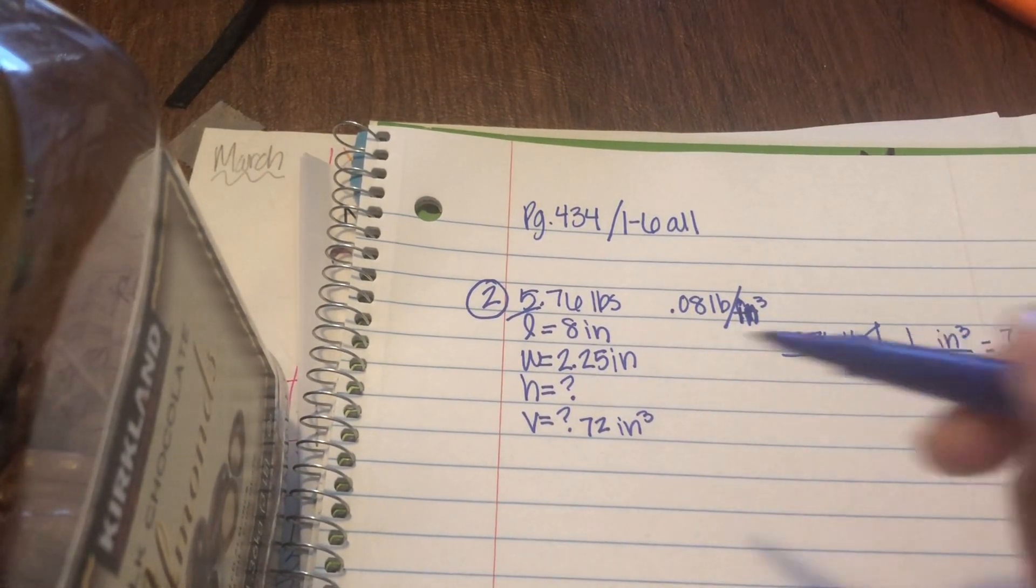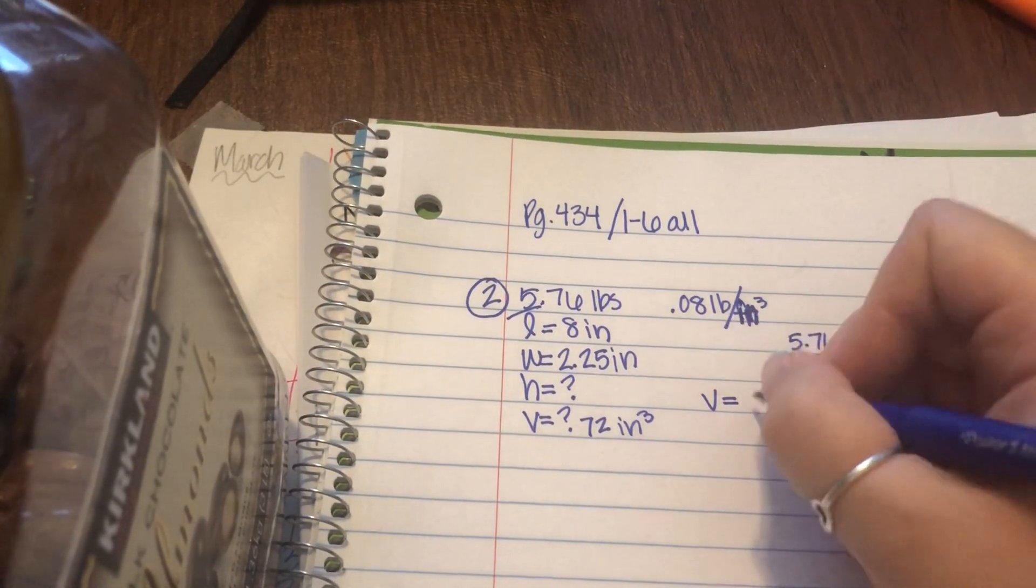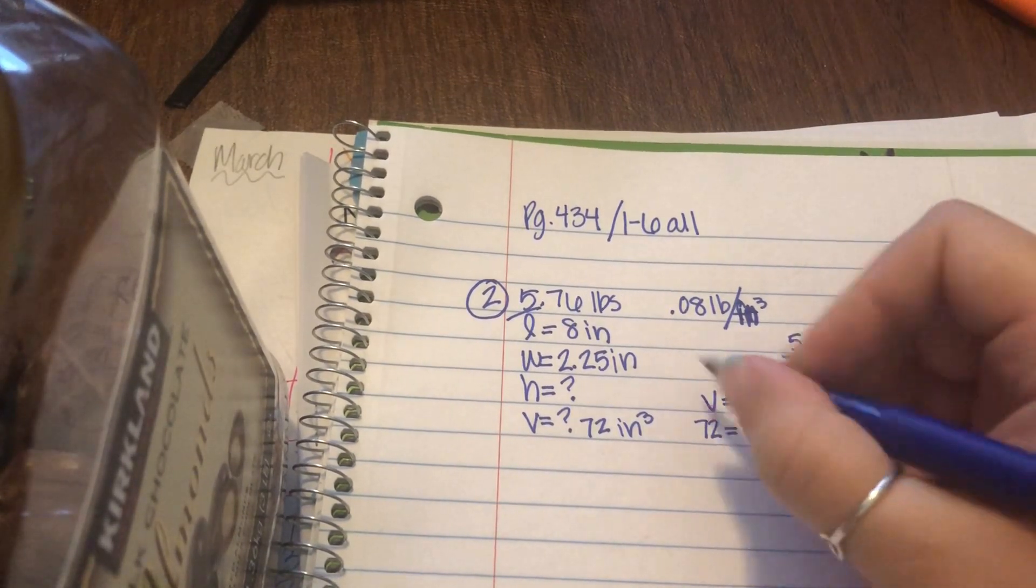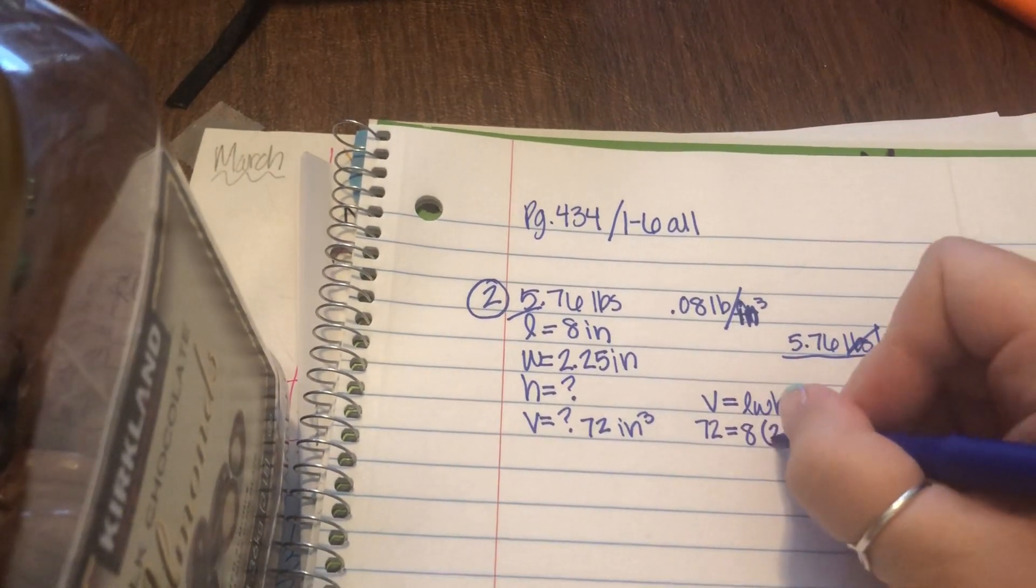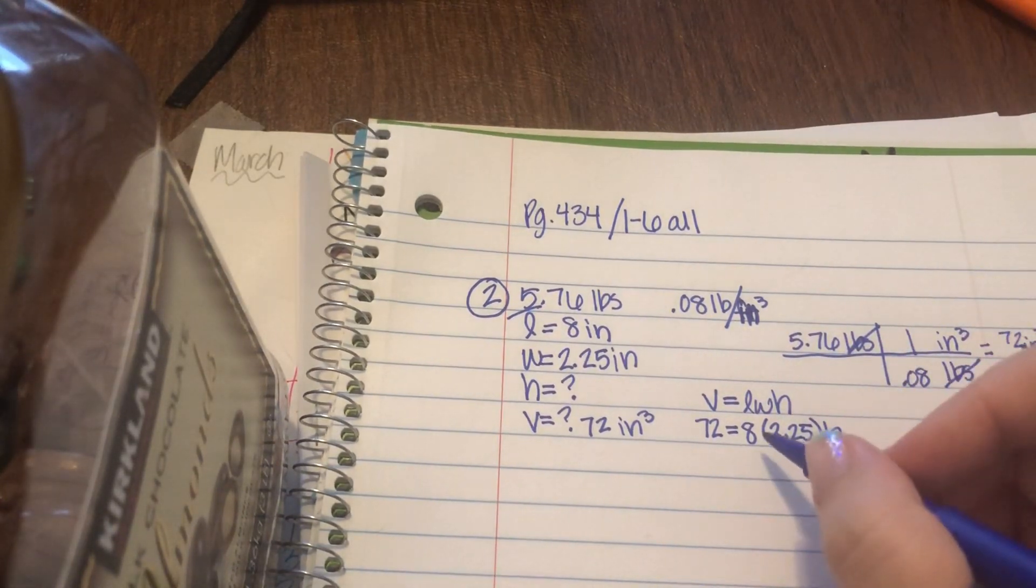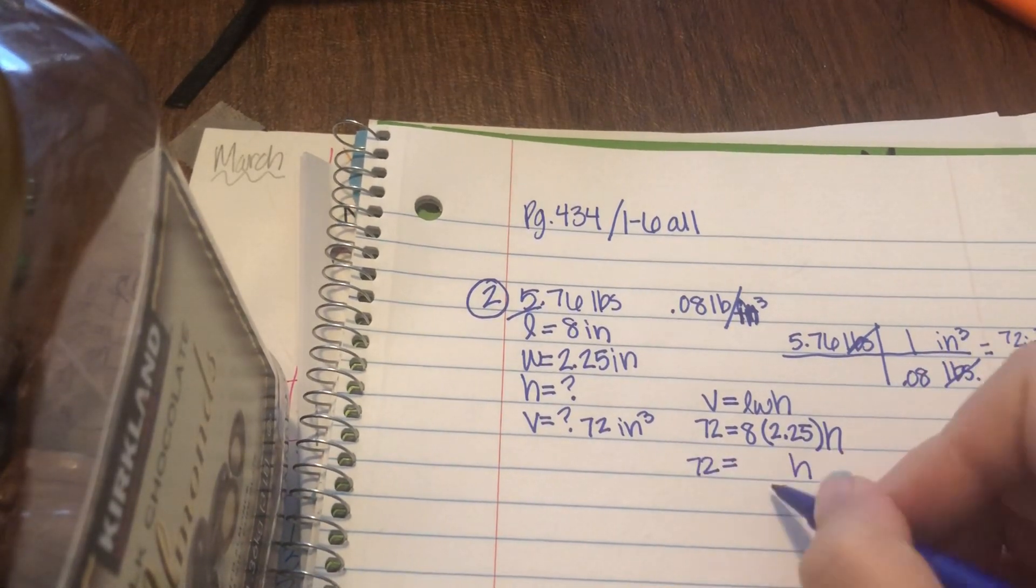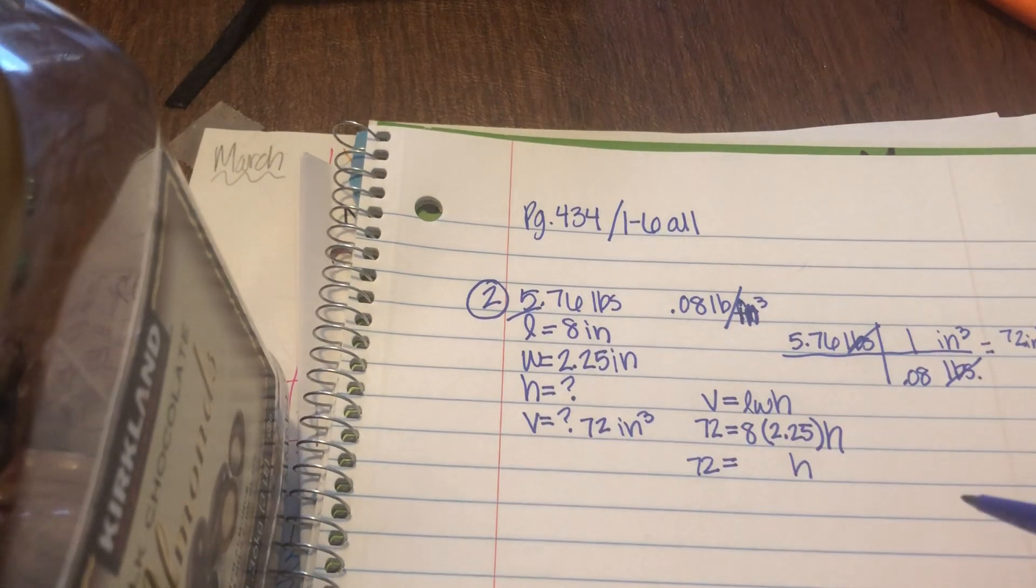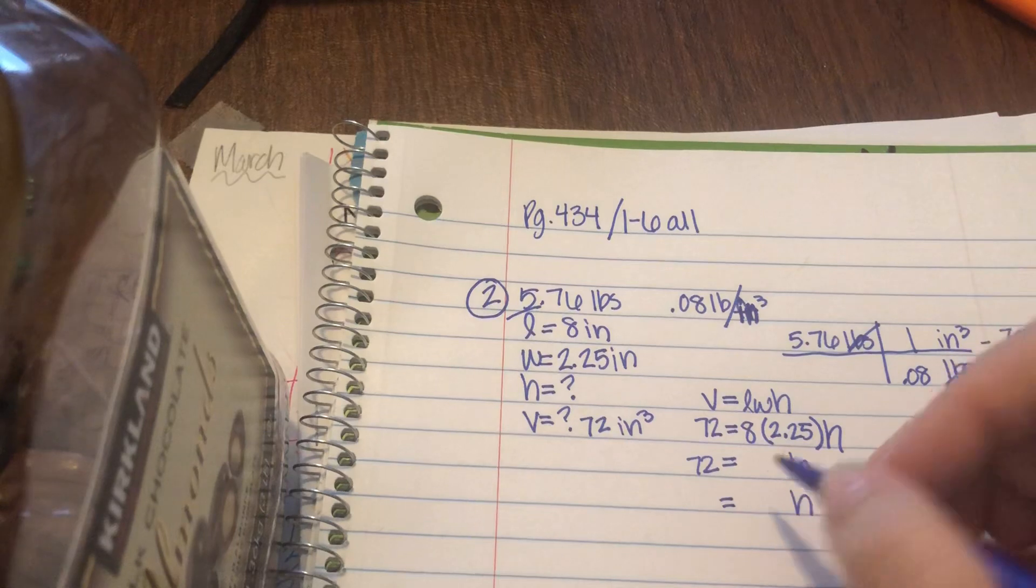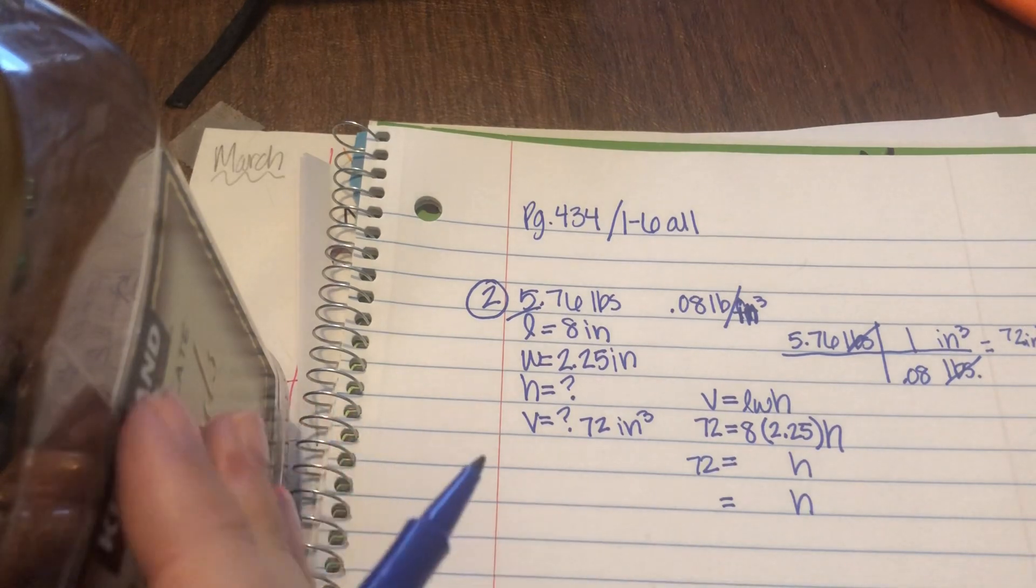Now you know how to find the height because, remember, volume of a rectangular prism, which that's what a brick is, is length times width times height. So you know the volume. It's 72. You know the length. They told you it was 8. The width was 2.25, and the height we don't know. So now you're going to multiply these two, get your answer, and it'll be that something H, and then you divide by that number, divide the same thing on the other side, and that will tell you how many inches it is. So I got you started on the hard part for number two. You guys go ahead and finish that, and then I'm also going to help you get started on problem six.